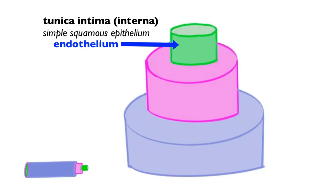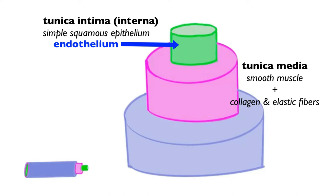Like all simple squamous epithelial tissue, there is a basement membrane underlying the endothelium, composed of both a basal lamina and a reticular lamina. The middle layer of blood vessels, shown in purple, is known as the tunica media, composed of smooth muscle, collagen, and for some blood vessels, elastic fibers. The basis of the tunica media is smooth muscle, though not all blood vessels have a tunica media — some actually lack smooth muscle.